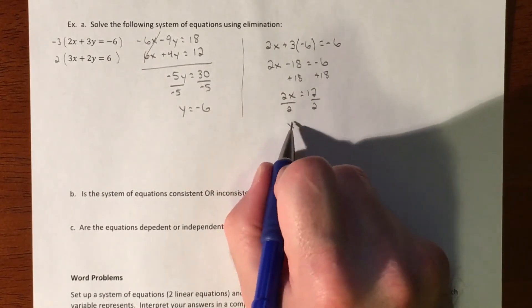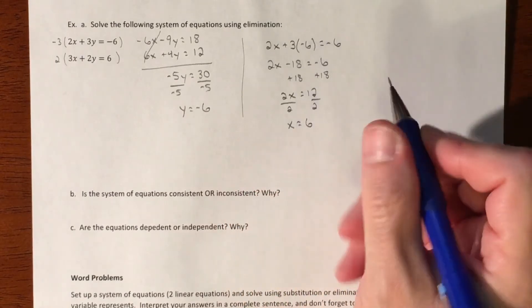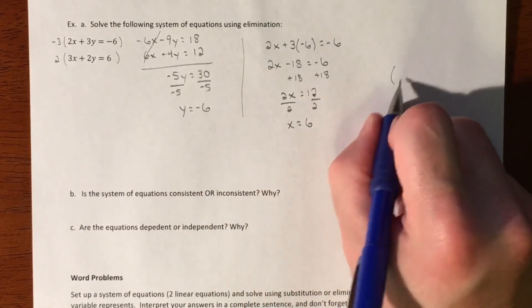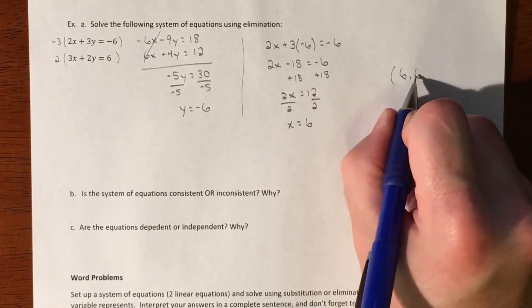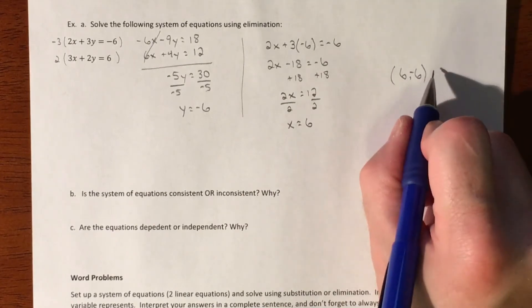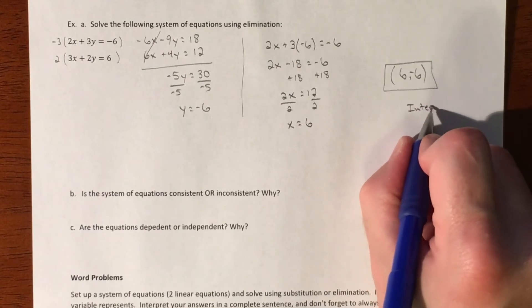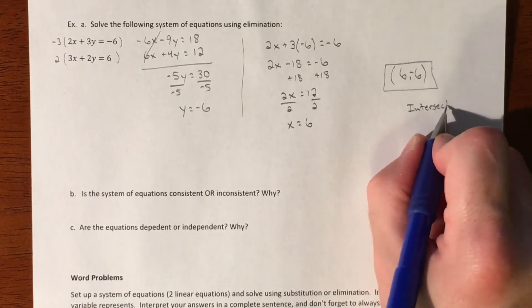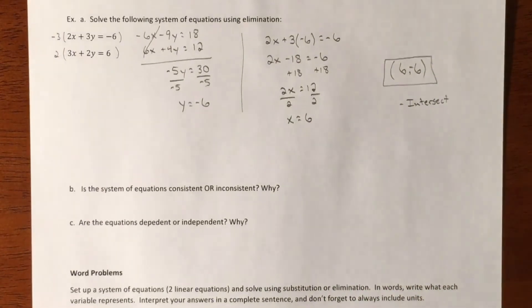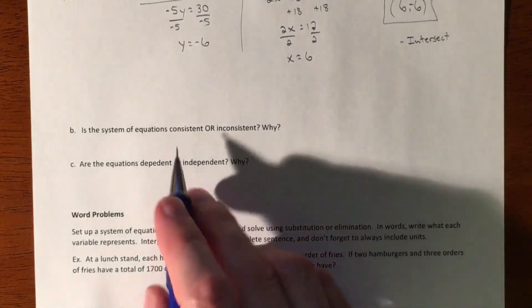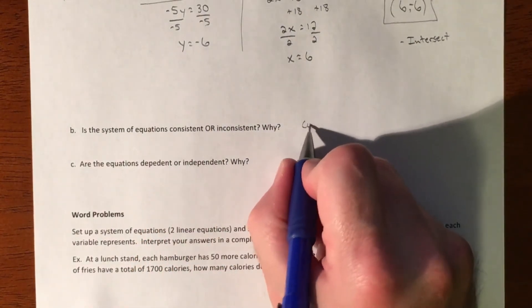Divide by 2, x equals 6. So our solution is (6, negative 6). That's where these lines intersect, just so we have a rough idea of what we've got going on. And then we want to classify it. So since we have a solution, it's consistent.